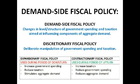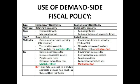Expansionary fiscal policy is used to reflate the economy — to get economic growth and increased employment. Using a budget deficit means an increase in government spending; for example, putting more money into the NHS allows you to employ more doctors and nurses, increasing employment, which leads to the positive multiplier effect — more employment leads to increased demand, which goes up and up in a positive cycle, leading to more demand within the economy.